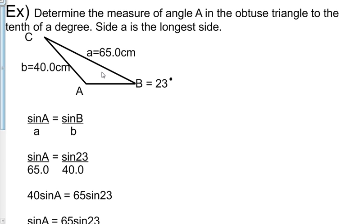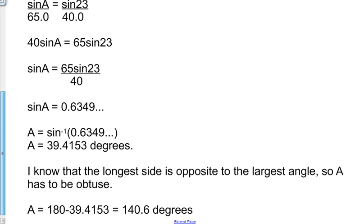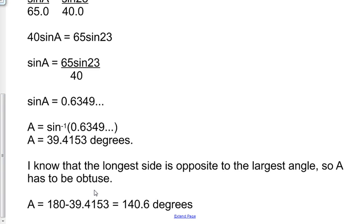But I know that the longest side is opposite the largest angle, so A has to be our obtuse angle. Therefore, A equals 180 minus 39.4153, which equals and rounds to 140.6 degrees.